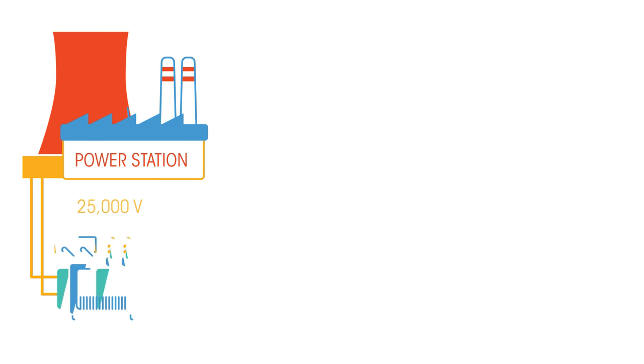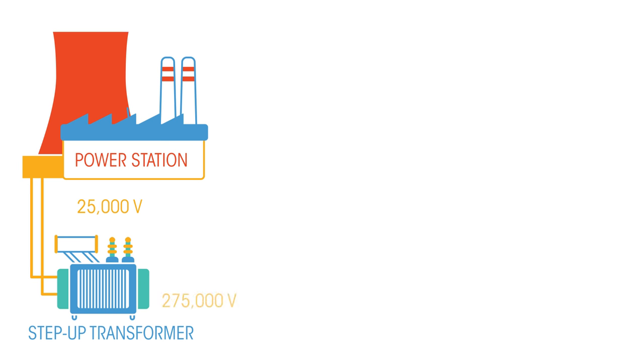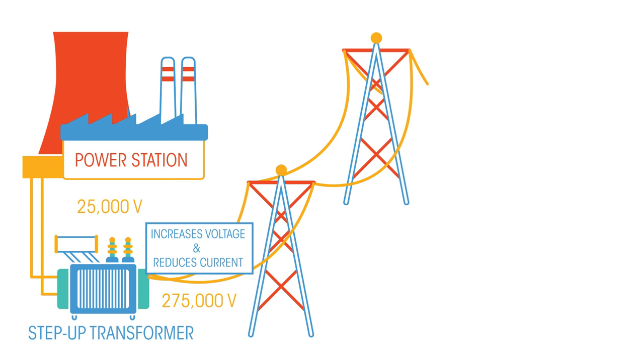When the electricity leaves the power station, it passes through a step-up transformer. A step-up transformer increases the voltage and reduces the current. Reducing the current makes the transfer of electricity more efficient, as less energy is lost as heat.